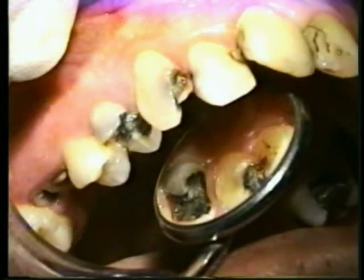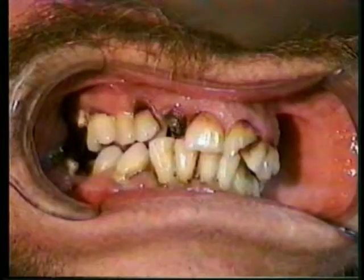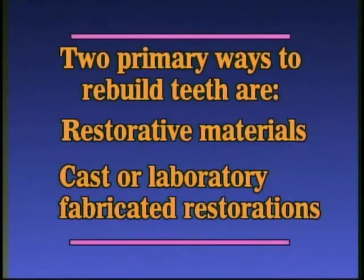Teeth which have been damaged by dental caries or which have been fractured due to trauma need to be restored to proper form and function. The two primary ways to rebuild teeth are with restorative materials and cast or laboratory fabricated restorations.